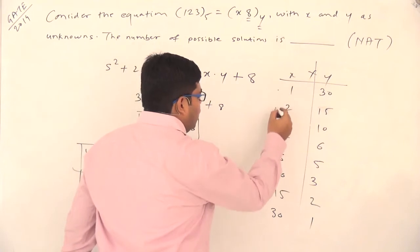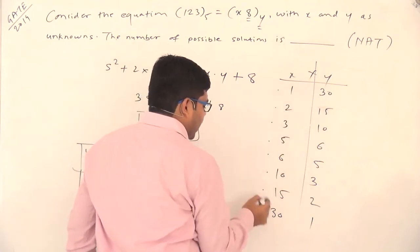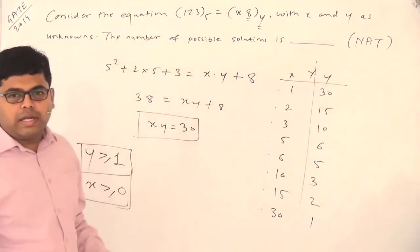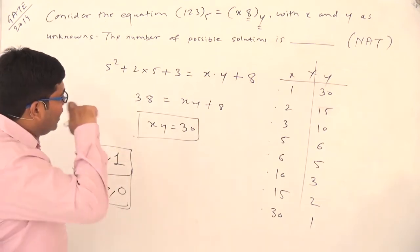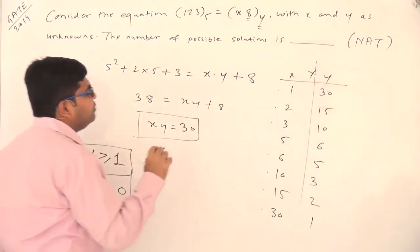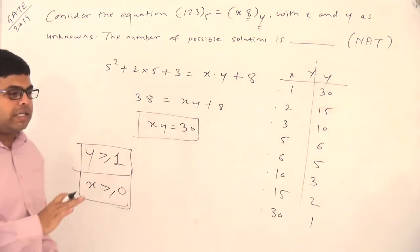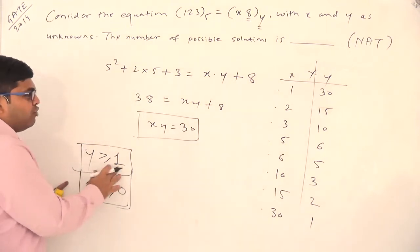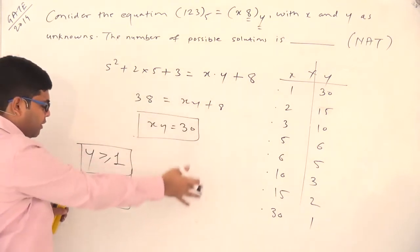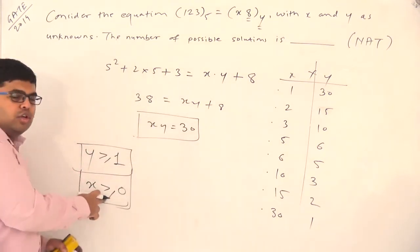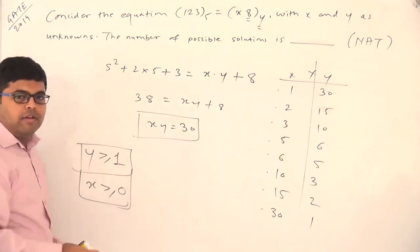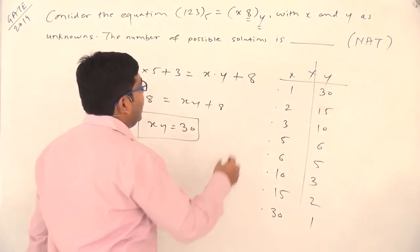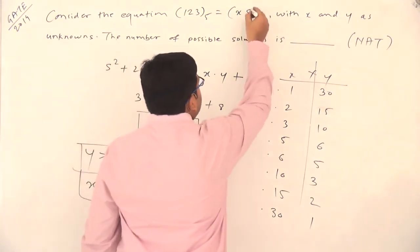If you count all factor pairs, the count comes out to 8. But 8 will not be the correct answer. The reason is there are certain restrictions on the values of x and y. The conditions y ≥ 1 and x ≥ 0 are satisfied everywhere, but there is one more condition.